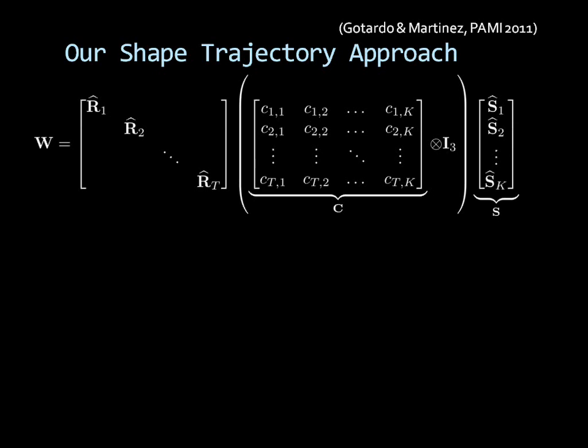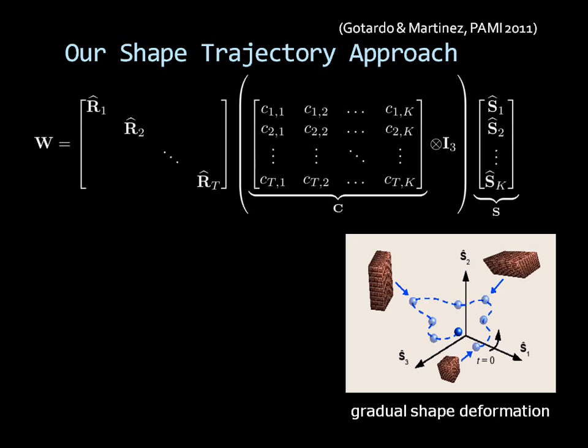To derive a more compact model of shape deformation with fewer unknowns, we begin with a standard model and then we consider the common scenario where the 3D object deforms only gradually from one image to the next. Each object shape is still represented as a point in the linear shape space. As the object deforms, its point representation describes a smooth time trajectory in this space.